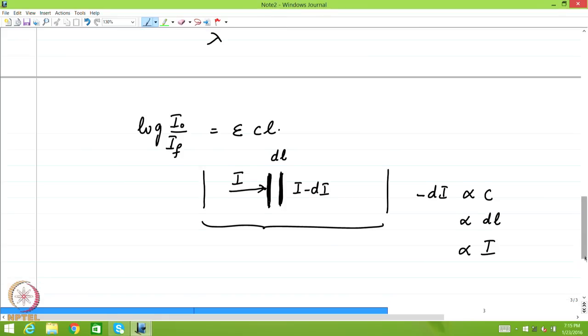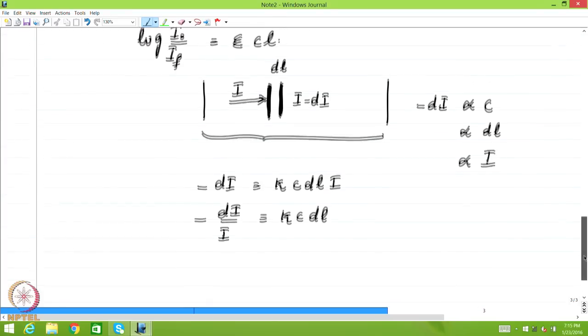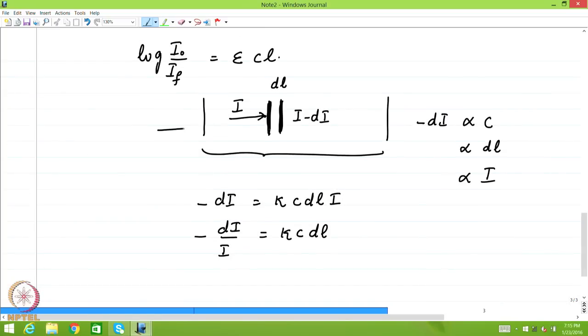Therefore, if you write this, the linear law simply gives you minus dI is some constant which I will write as kappa, some k times C times dL times I. And so you can write minus dI by I is kappa, a constant, C dL. And now, you extend this argument that this is what happens throughout and therefore,